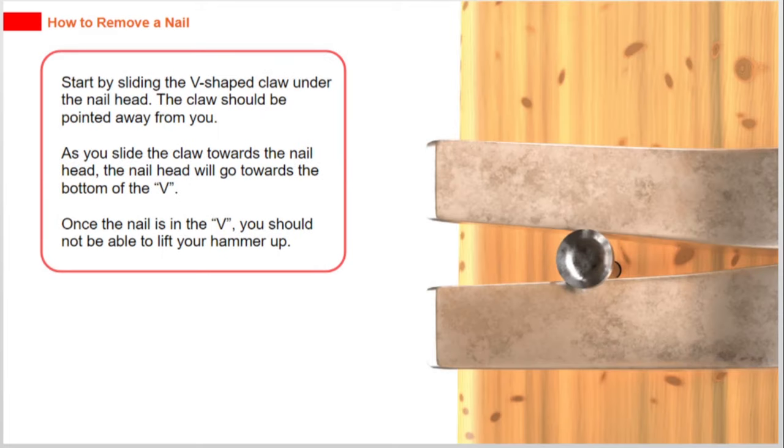Start by sliding the V-shaped claw under the nail head. The claw should be pointed away from you. As you slide the claw towards the nail head, the nail head will go towards the bottom of the V. Once the nail is in the V, you should not be able to lift your hammer up.